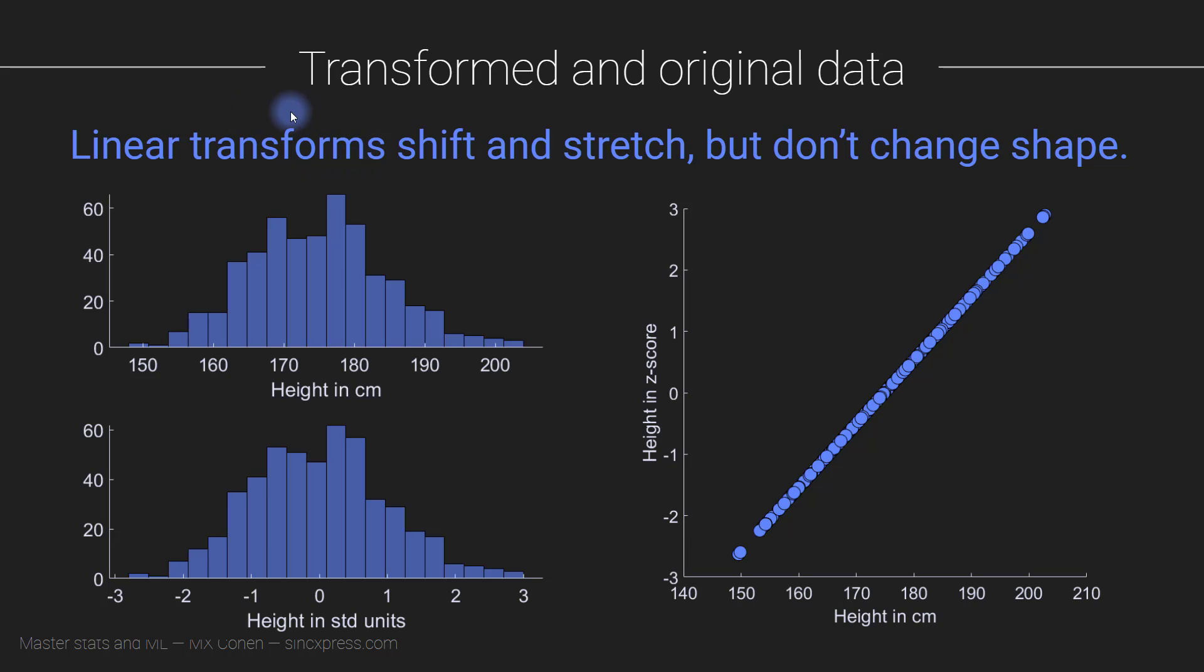So the idea of linear transforms is that we can shift things around on the x-axis here, but we're not really changing the shapes of the distributions. We're not really changing the relationships across the different data points. And that is illustrated in this plot here.